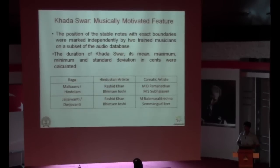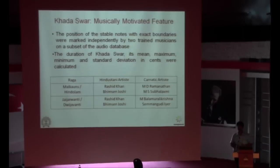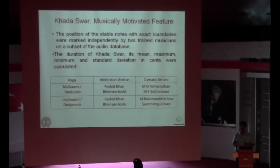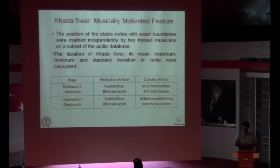As we have seen in the previous work, the values of N and J were selected empirically as 400 milliseconds and 20 cents. We tried to validate this with musicological background. The term khada swar was selected — we define khada swar as a stable note of longer duration within a specified threshold, meaning a stable note with proper boundaries. These boundaries are more important here.